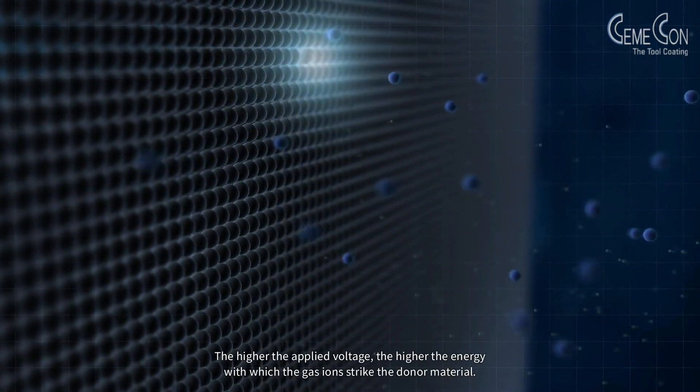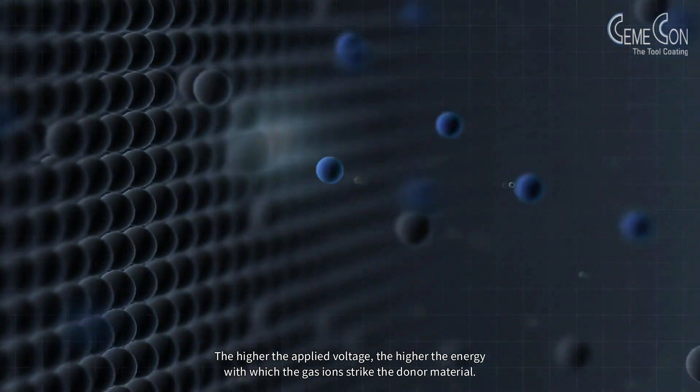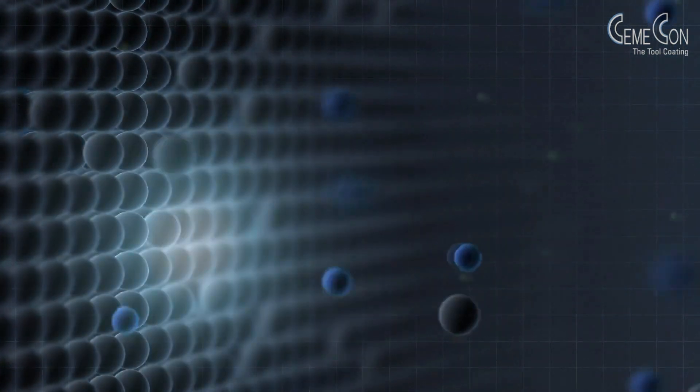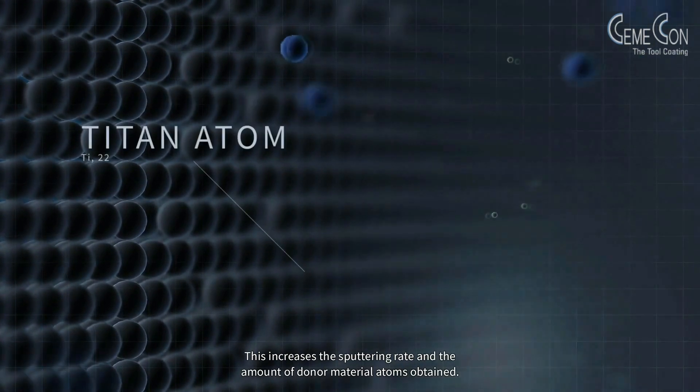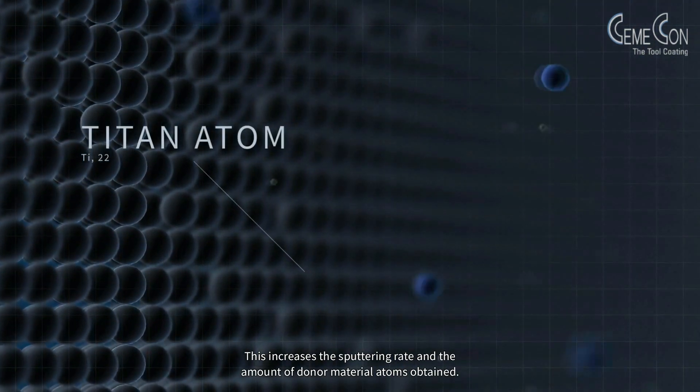The higher the applied voltage, the higher the energy with which the gas ions strike the donor material. This increases the sputtering rate and the amount of donor material atoms obtained.